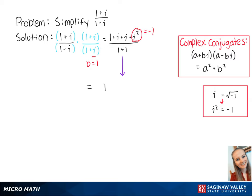So now we have 1 plus 2i minus 1 over 2.